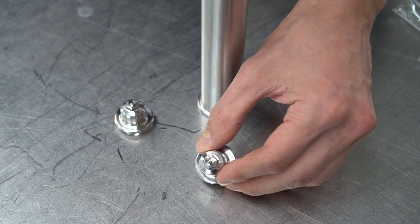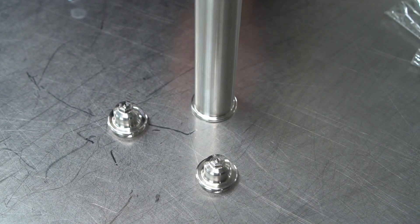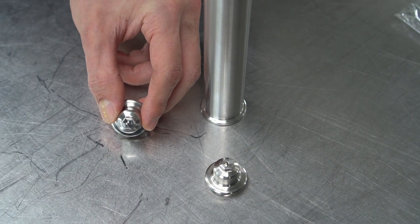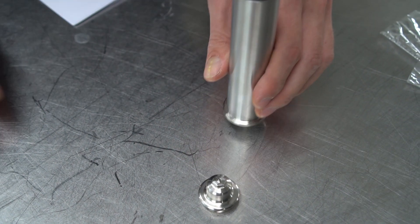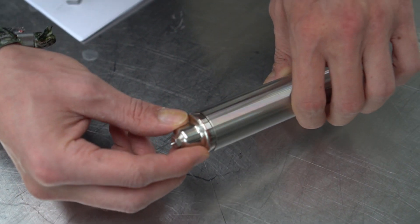First you choose the right tip. The fine tip with one millimeter diameter is for chocolate. The larger one with 1.2 millimeters is for marzipan and other food.